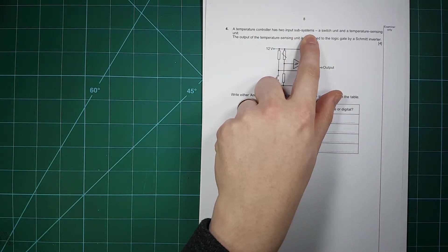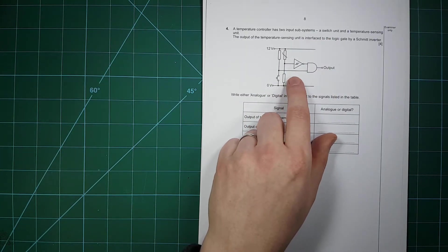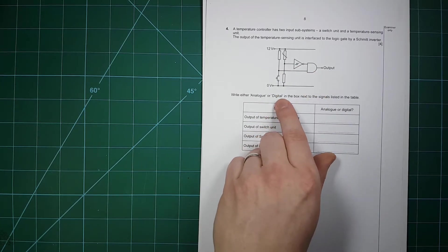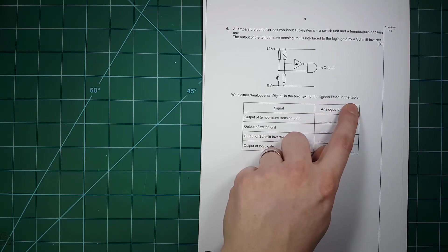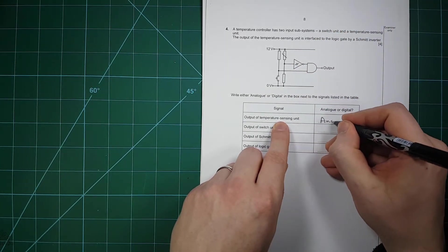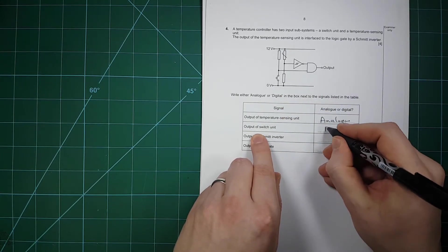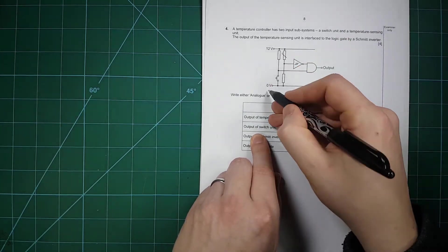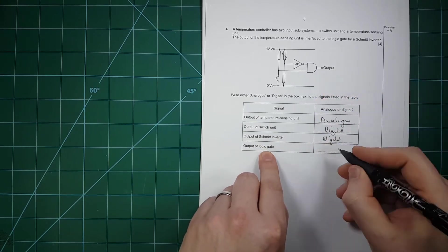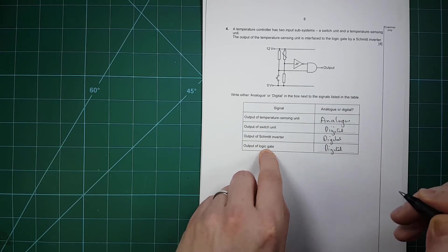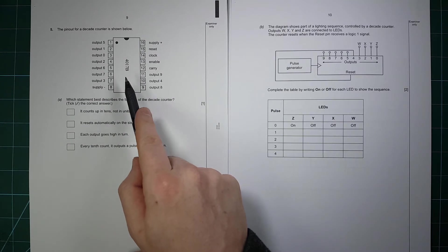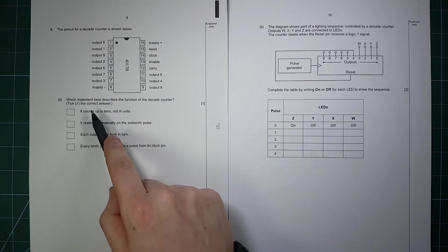A temperature controller has two input subsystems: a switch unit, a temperature sensing unit, a Schmitt inverter, and an AND gate. Write analog or digital in the box next to each signal. The output of the temperature sensing unit is analog. The output of the switch is digital — it's either 12 volts or 0 volts. The output of the Schmitt inverter is digital, and the output of the logic gate is digital. It's all digital apart from the temperature sensor.